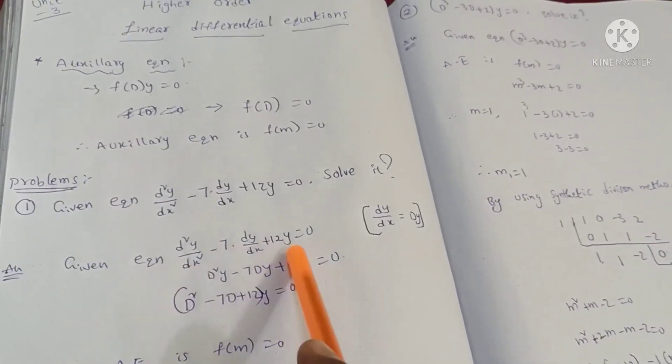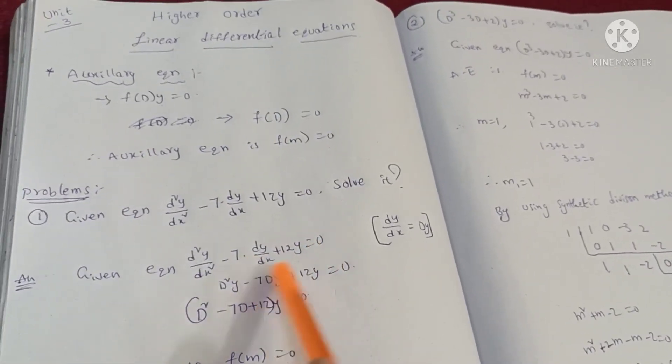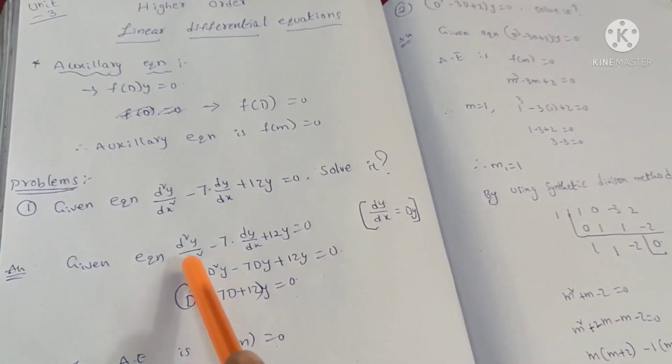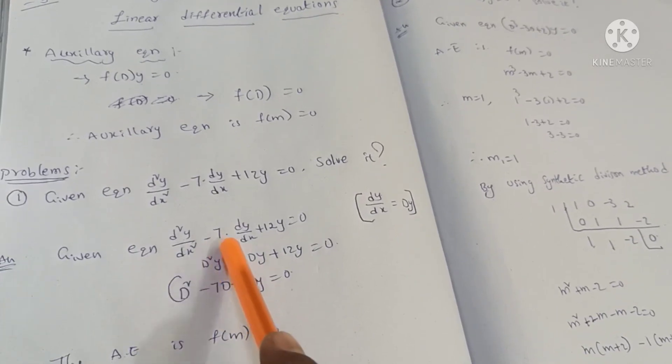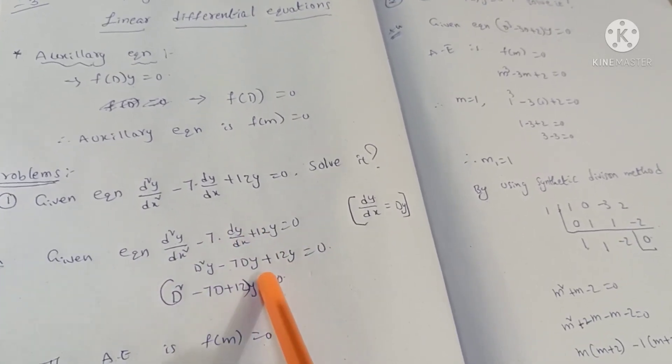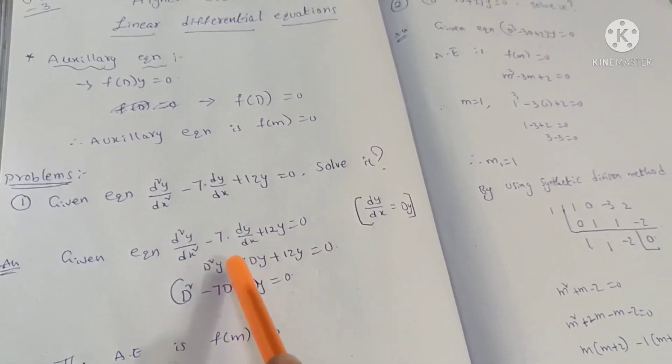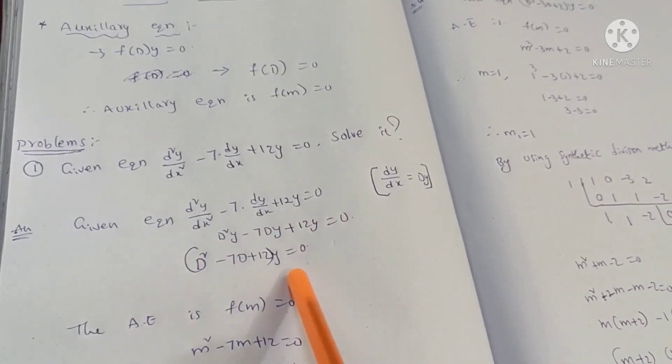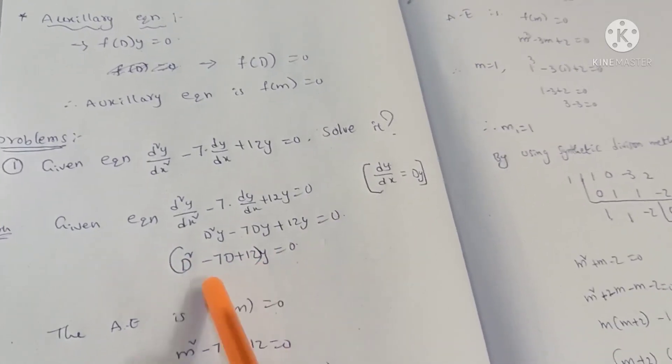The second equation is given equation. Now, d/dx capital D into y, and d/dx into D. D²y minus 7Dy plus 12y equals 0. The unit has y common. D² minus 7D plus 12 into y.